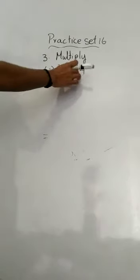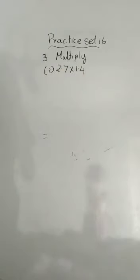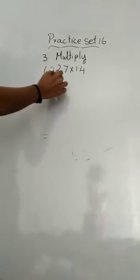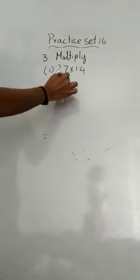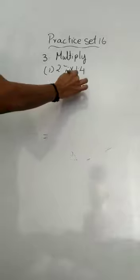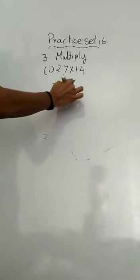Now the third question: multiply the two given numbers. You can use this method — first forget the decimal points, multiply, and at the last step place the total decimal points from both numbers in the answer.